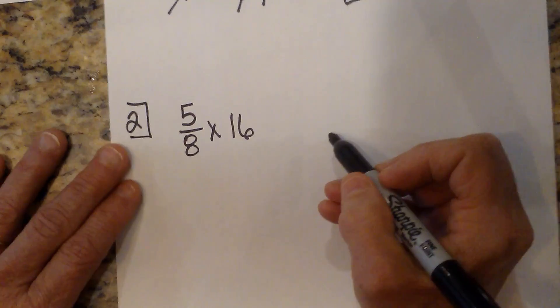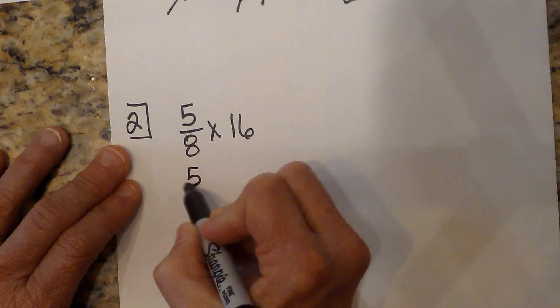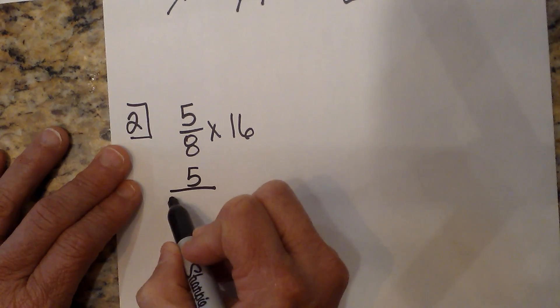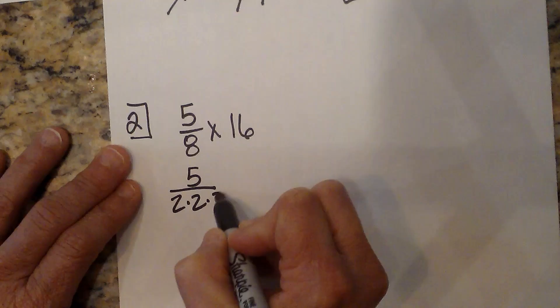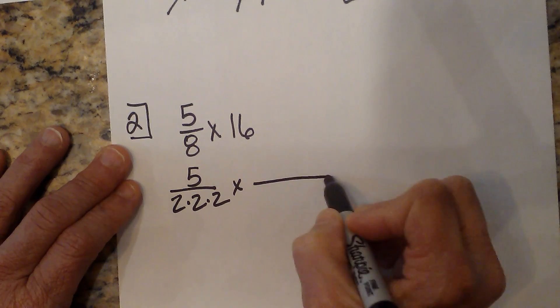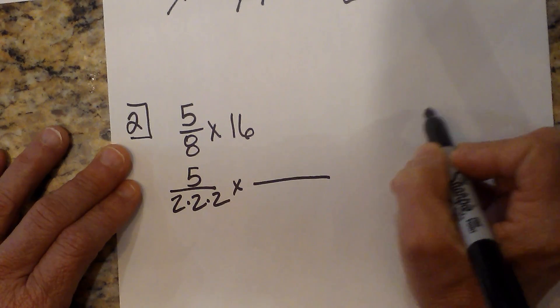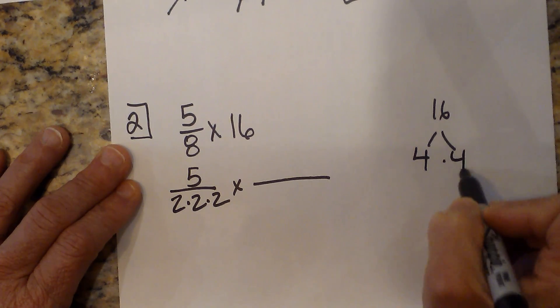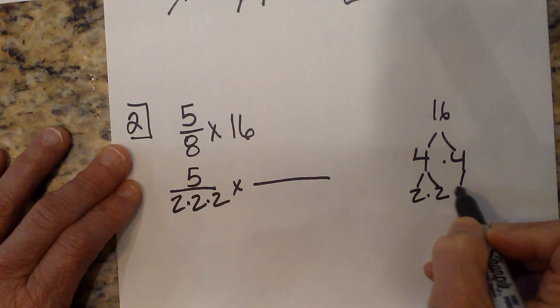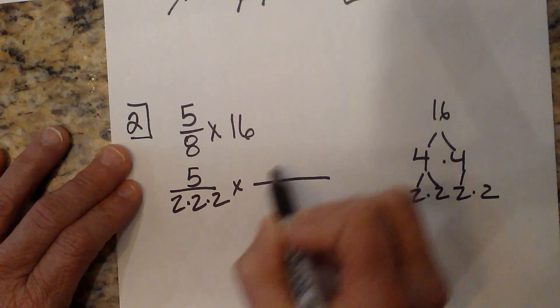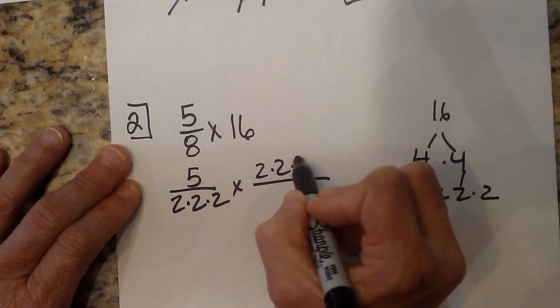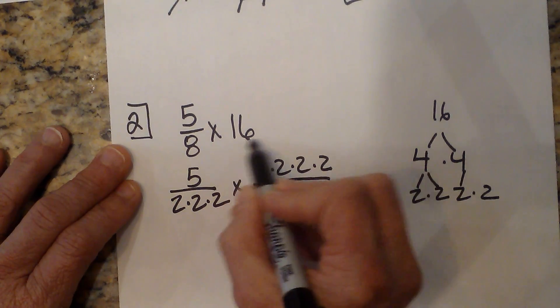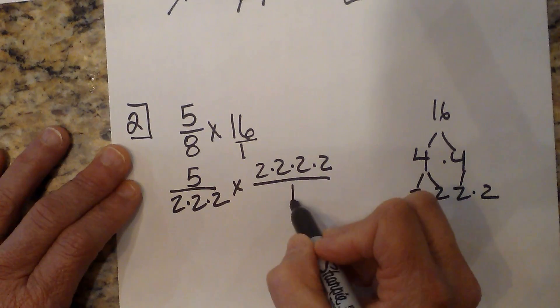And now let's look at the whole number. So 5 over 8, and 8 is 2 times 2 times 2, times 16. Well, 16 we know—let's go over here and look at a factor tree. That's 4 times 4, but then that breaks down to 2 times 2 and then another set of twos. So I have 4 twos—they're my prime factors. And we said we always put the whole number over 1.